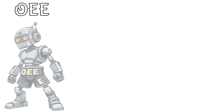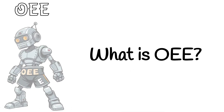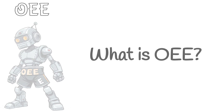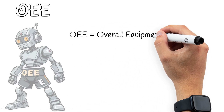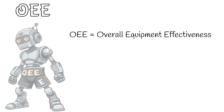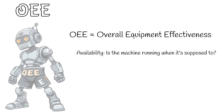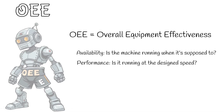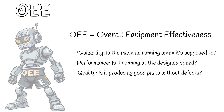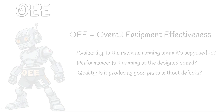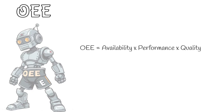Part 1: What is OEE? Let's start with OEE, which stands for Overall Equipment Effectiveness. This metric tells you how effectively a piece of equipment is being used compared to its full potential. OEE combines three factors: Availability — is the machine running when it's supposed to? Performance — is it running at the design speed? Quality — is it producing good parts without defects? Multiply these three together and you get OEE.